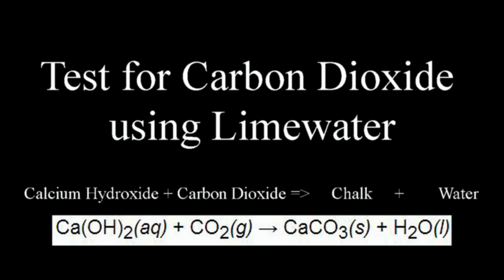To test for carbon dioxide, we'll use a solution of lime water, which is calcium hydroxide. When the calcium hydroxide mixes with carbon dioxide, it'll produce chalk and water. The chalk will appear as a white substance in the solution. Lime water starts as a clear solution, and as it reacts with carbon dioxide produced from the flame, it'll turn milky.